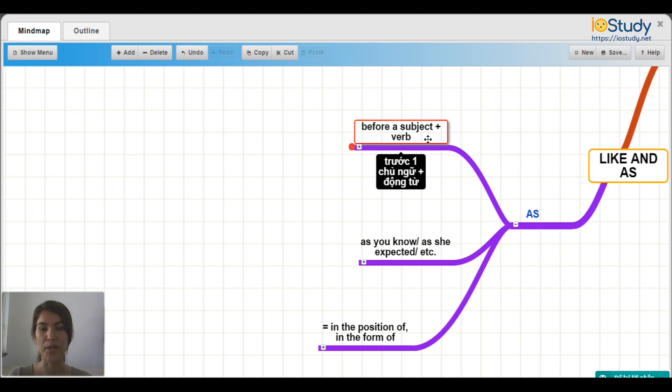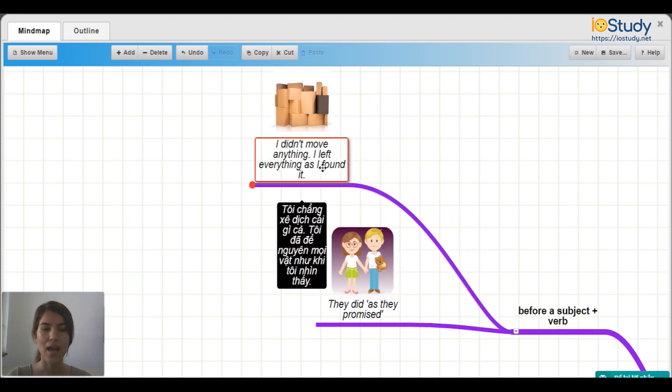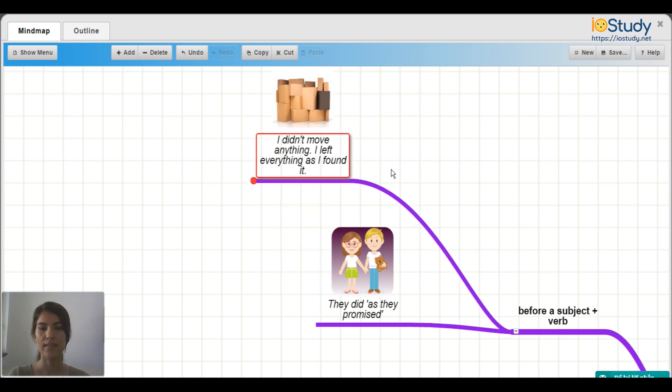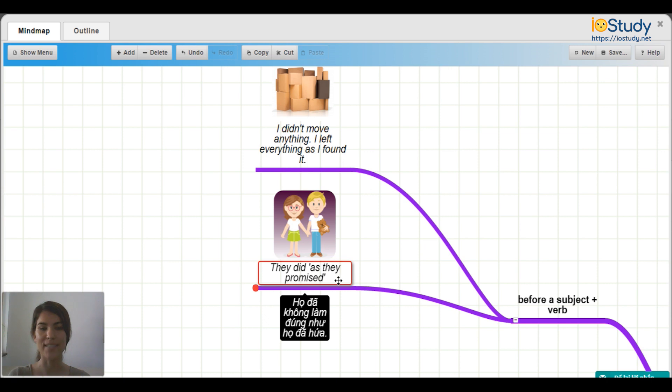Before a subject plus a verb. For example, I didn't move anything. I left everything as I found it. And they did as they promised. So in both of these, we see as plus a subject and a verb.